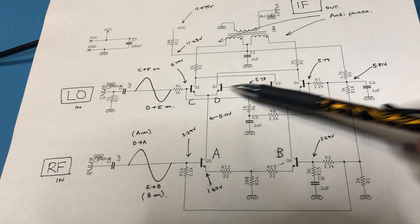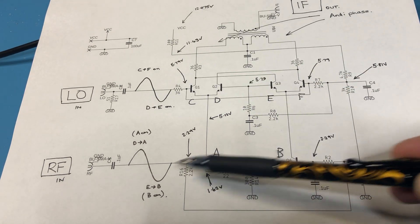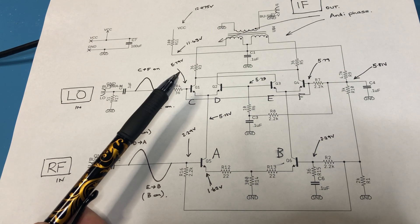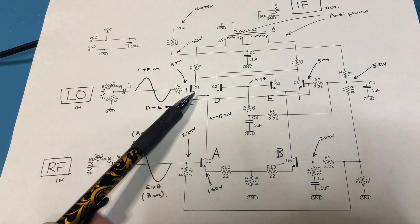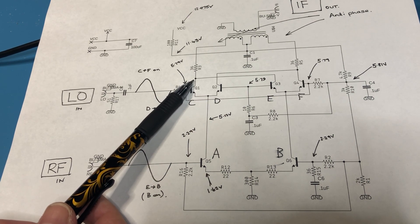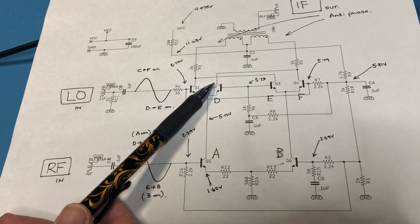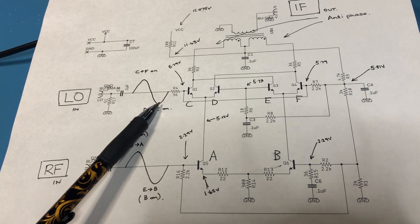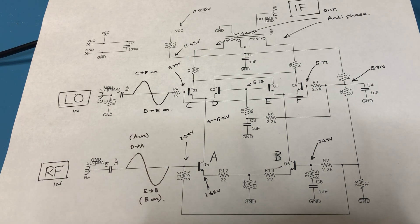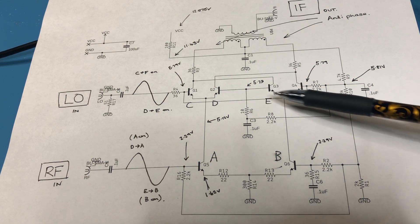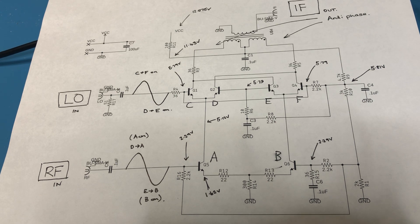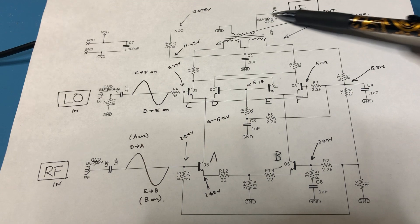Either the CD or EF pair will be enabled at any one time depending on the RF voltage. Assuming CD is enabled: when the LO voltage goes positive, C will conduct more than D, and the collector voltage at C will be lower than at D. Vice versa when the LO voltage swings the other way. The result of these interactions is that the two differential pairs are alternately being enabled and disabled, and you effectively get the mixed product appearing at the output.